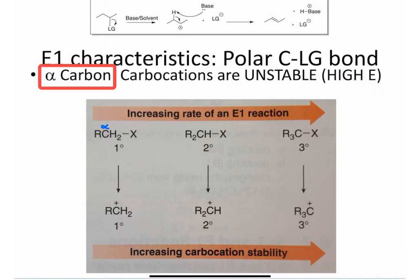The alpha carbon, that's the carbon that's right next to the leaving group, is the one that's going to bear the positive charge. It will become the carbocation.